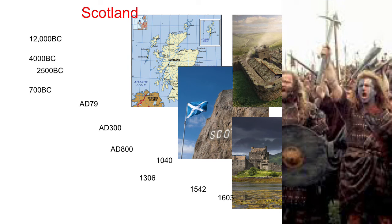Around AD 800, the Vikings arrived to trade and settle around Scotland. In 1040, the medieval period saw the gradual expansion of the Scottish kingdom as kings and queens came and went. The best known early Scottish king, Macbeth, was killed in battle in 1057. In 1306, Robert the Bruce was crowned king of Scotland. War between England and the Scots ranged until 1314, when Robert the Bruce's army defeated Edward II.